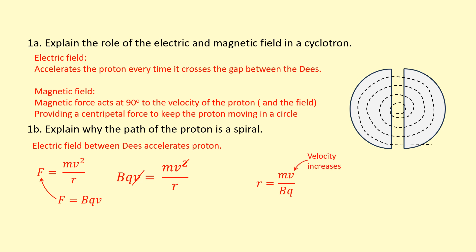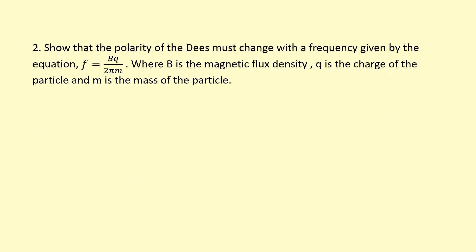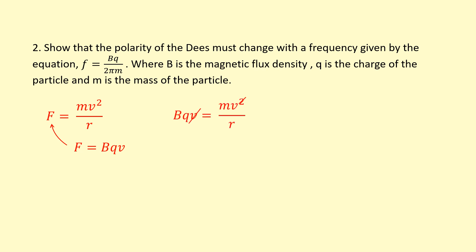Because the velocity is increasing due to the electric force accelerating it across, if the velocity increases the radius also increases — this is why it spirals outwards, moving faster and faster. This also shows that the polarity of the D's must change with the frequency given by f = bq / 2πm, where b is the magnetic flux density, q is the charge, and m is the mass of the particle. We use mv²/r — the centripetal force equation — set equal to the magnetic force bqv.